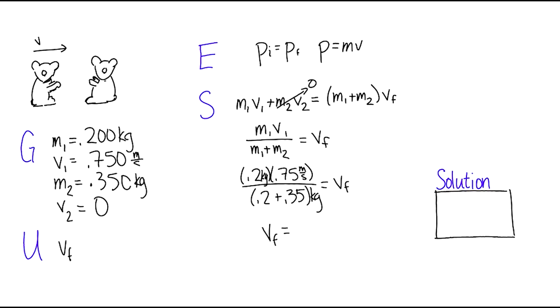Put it into your handy-dandy calculator and you get that your final velocity is 0.273 meters per second. Put that over in your solution box.